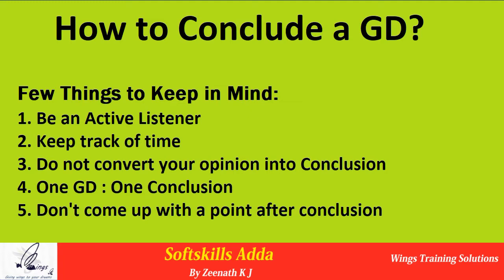Point number four: if any other participant has already given a conclusion to the GD, do not commit the mistake of giving your own conclusion one more time. Whether the participant did a great job or the worst job is none of your business. If there is one GD and one topic, there has to be only one conclusion. Respect this and do not come up with a second conclusion. If you have understood all these points, you will be eligible to conclude the GD.